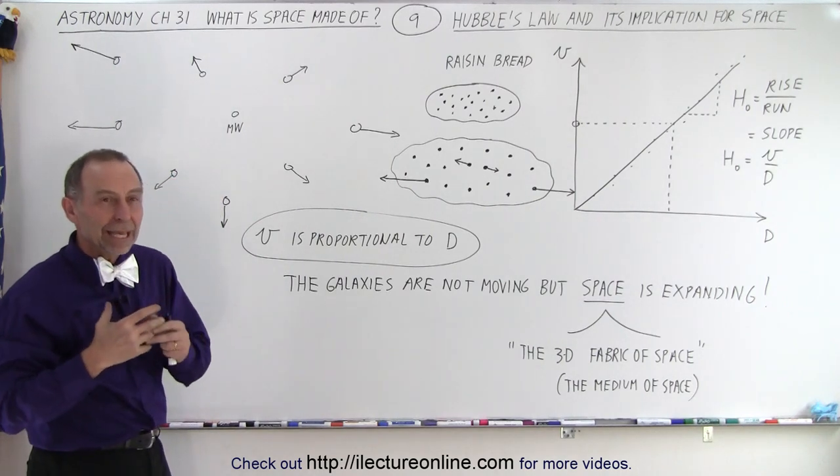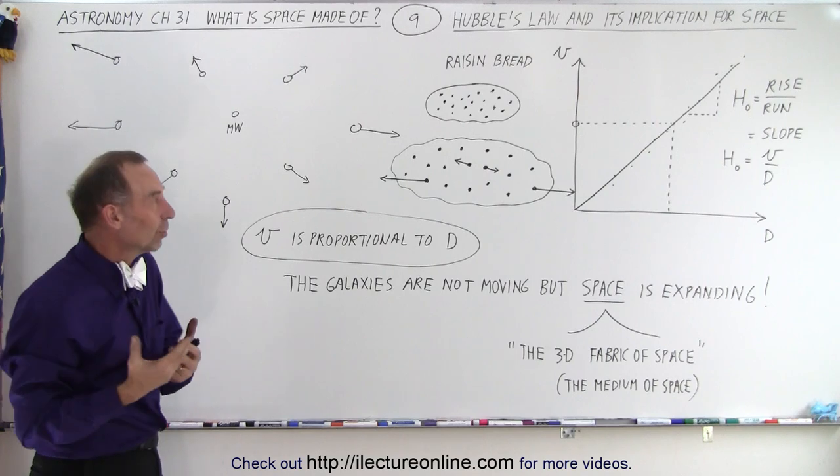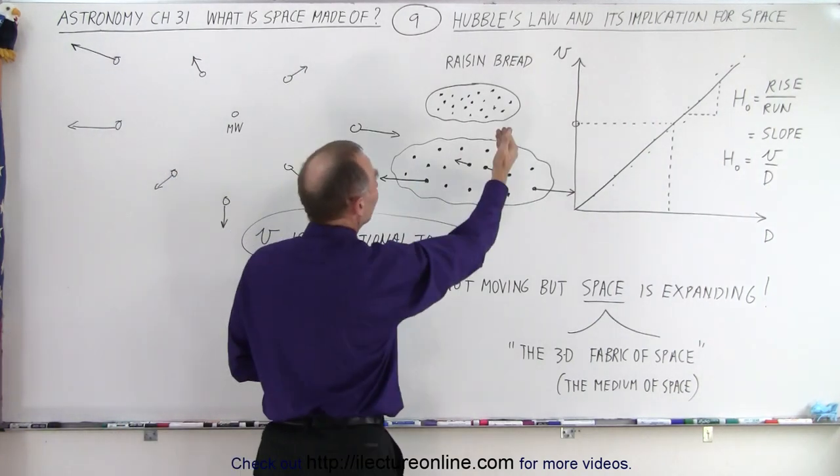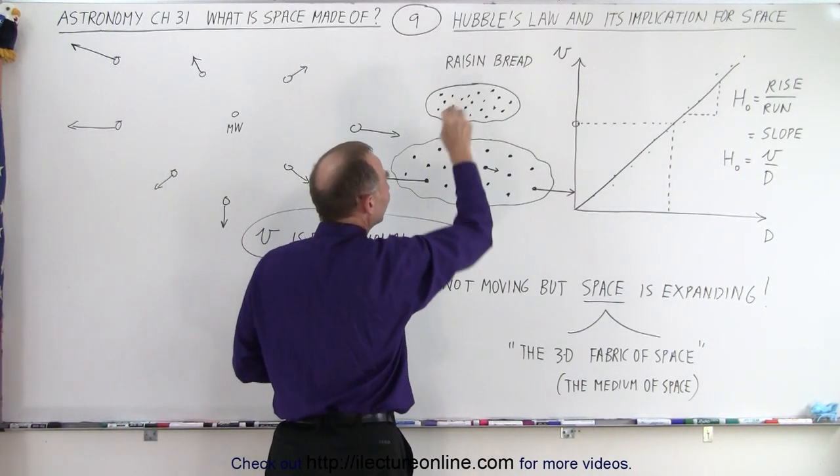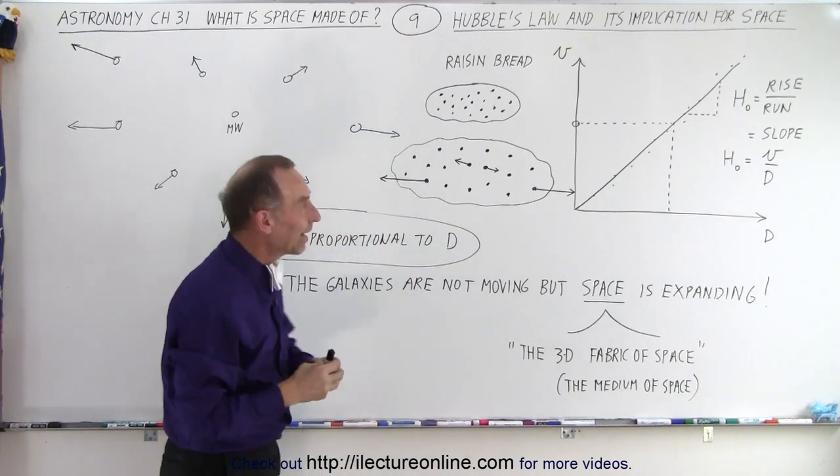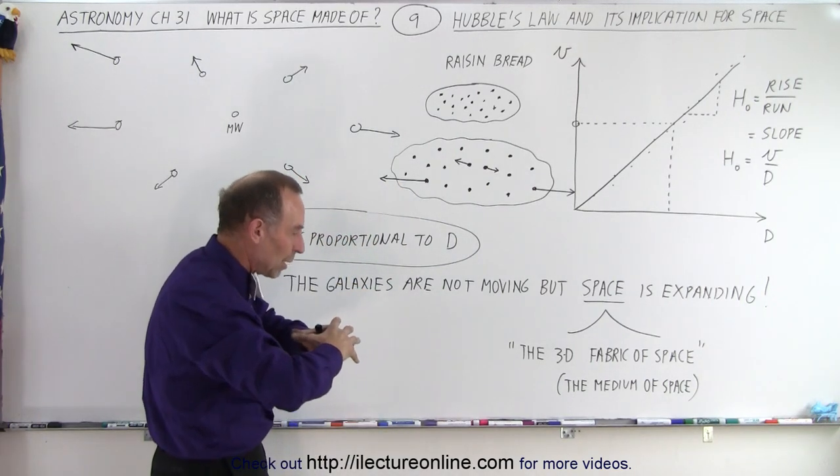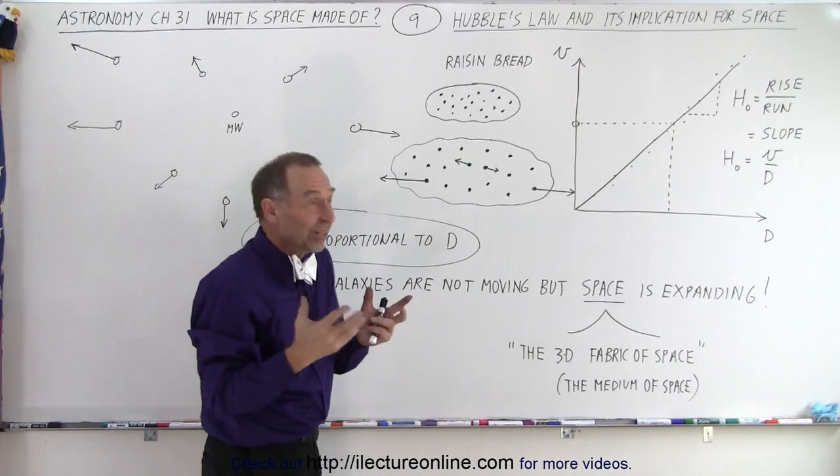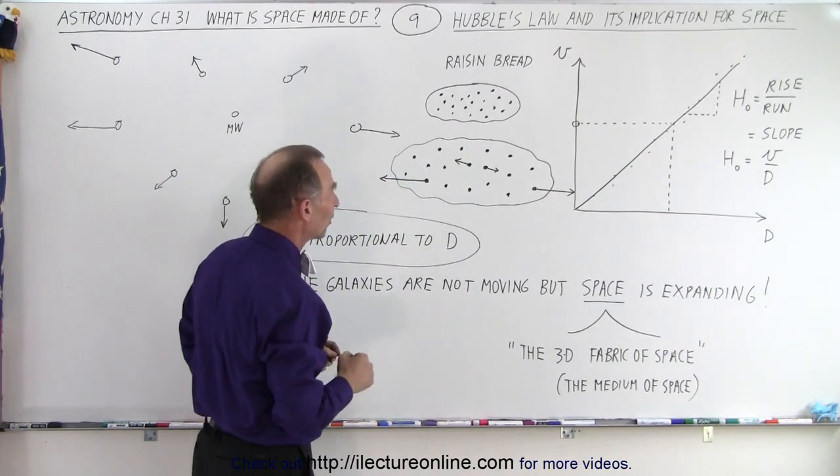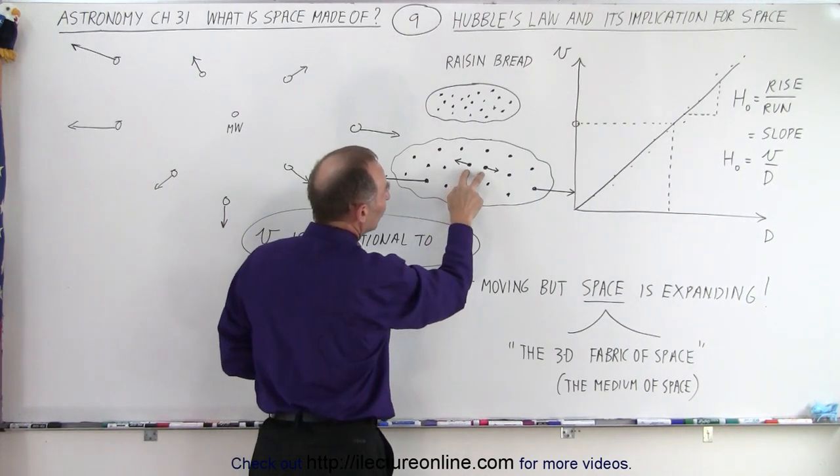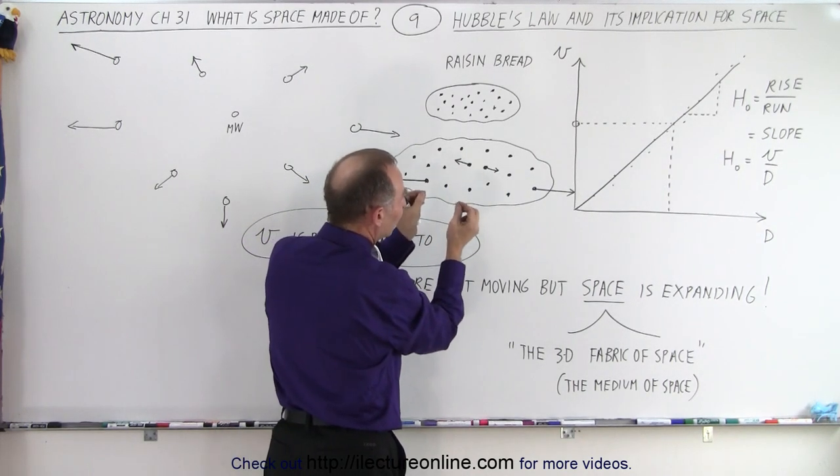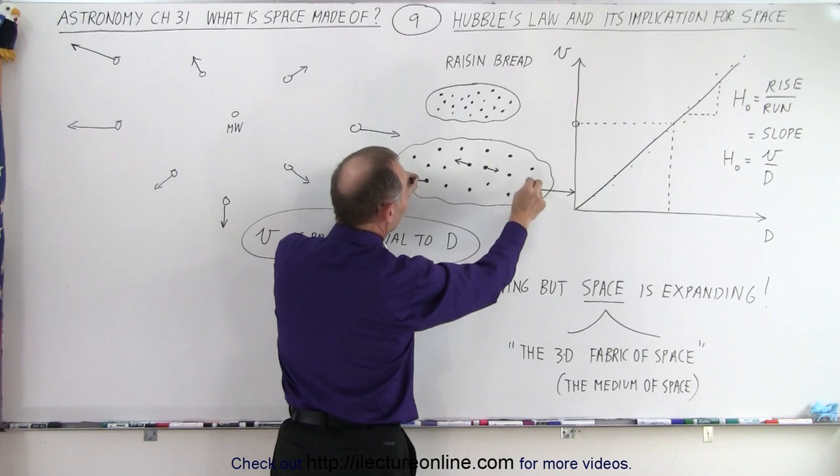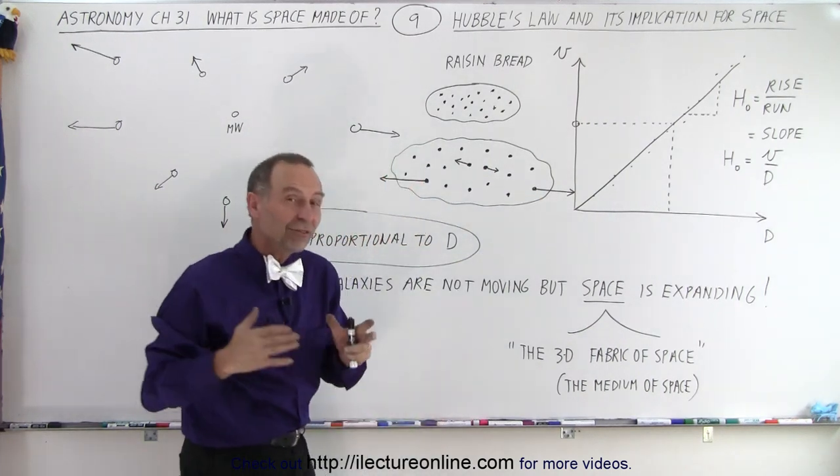And then he began to realize, well, if that's the case, it's kind of like a raisin loaf. If you're trying to make raisin bread and you make the dough and you put raisins in there, and of course you have yeast inside the dough, as you're allowing the dough to rise, the raisins move away from each other, just like galaxies move away from each other in the universe. And two raisins that are close to each other don't move quite that fast away from each other. Raisins that are far away from each other, they move a lot faster.